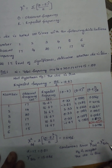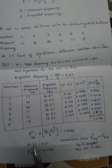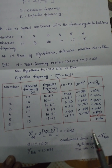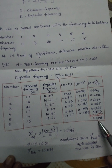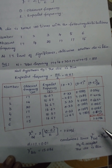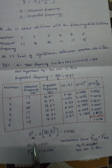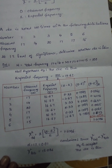Now we will substitute these values into the chi square formula. Chi square equals summation of O minus E whole square upon E, which is directly from the table. The sum of all these values is 1.2796. So the chi square calculated value is 1.2796.